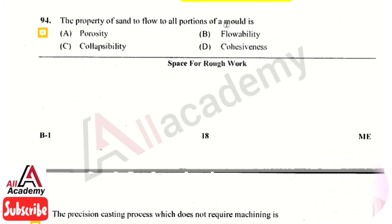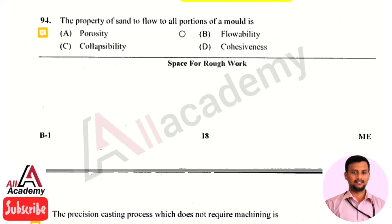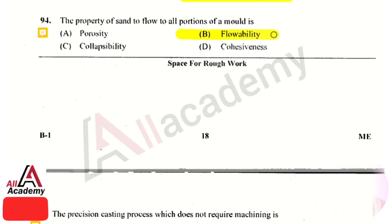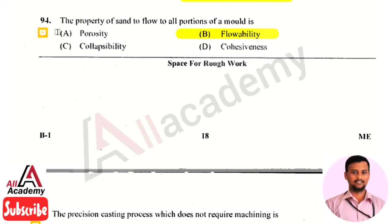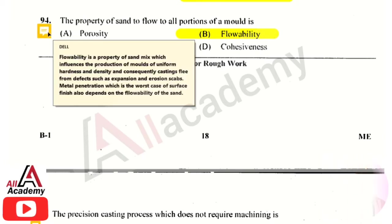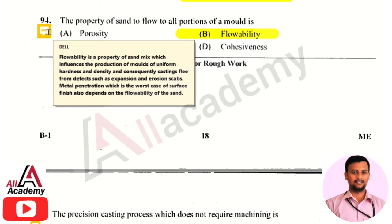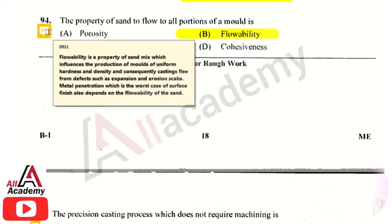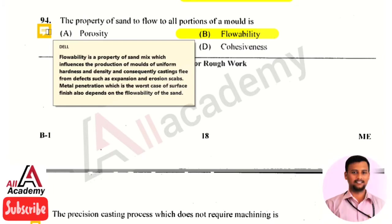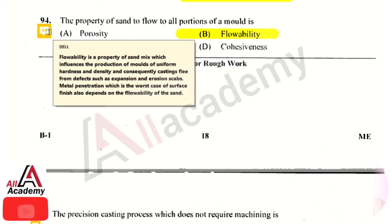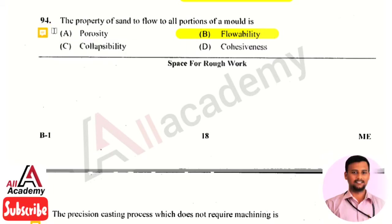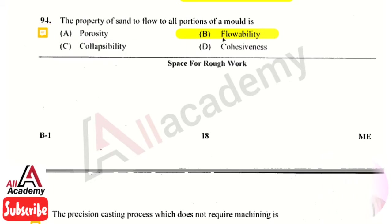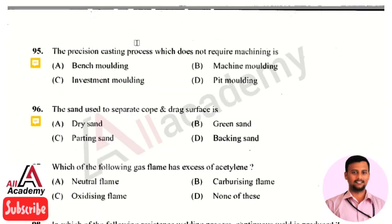The next question: the property of sand to flow to all portions of a mold — the right answer is option 2, that is flowability. Flowability is a property of a sand mix which influences the production of molds of uniform hardness and density, and consequently prevents damages or defects in a mold.